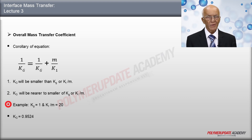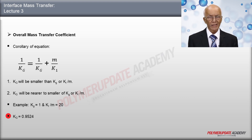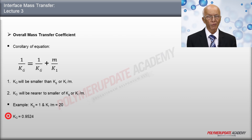For example, let kg equal 1 and kL divided by M equal 20, giving Kg equal to 0.9524.